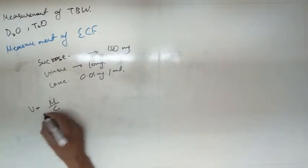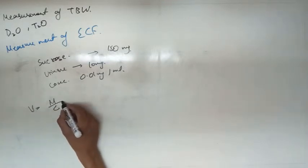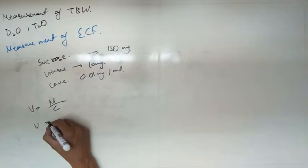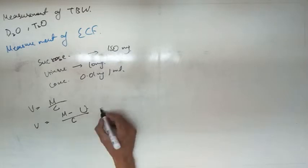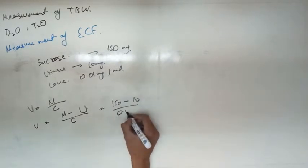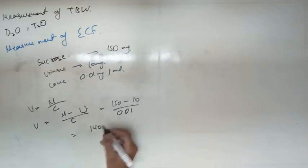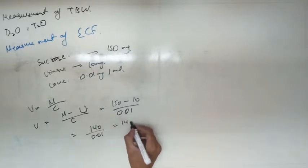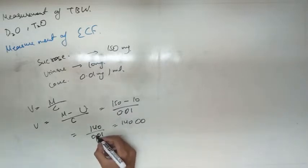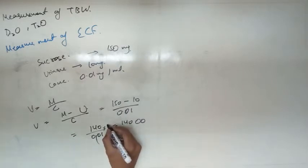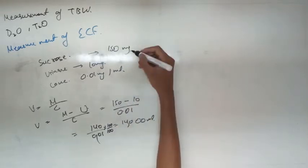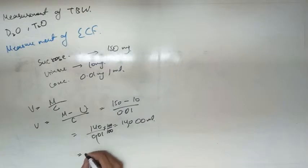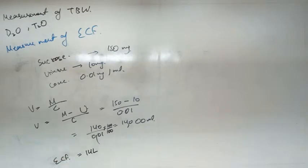The formula is: V = (M − urine loss) / C. So: V = (150 − 10) / 0.01 = 140 / 0.01 = 14,000 mL. Since we took all values in lower units, this gives us approximately 14 litres of extracellular fluid.